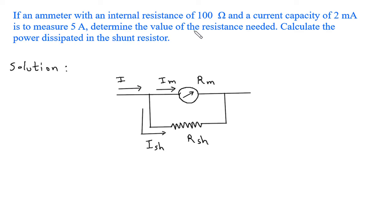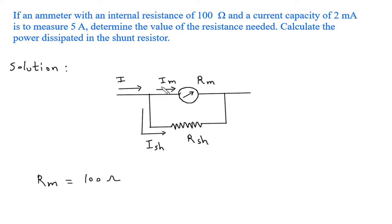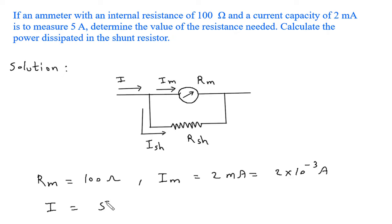So what we have to find: determine the value of the resistance needed. We have to find RSH, and then calculate the power dissipated in the shunt resistor. Rm is equal to 100 Ohm. Im is equal to 2 mA or 2 into 10 raise to minus 3 ampere. I is equal to 5 ampere.